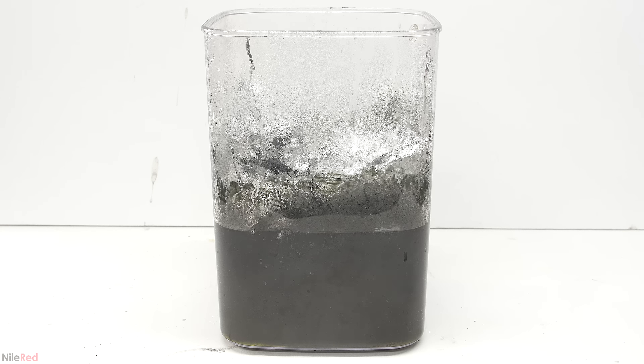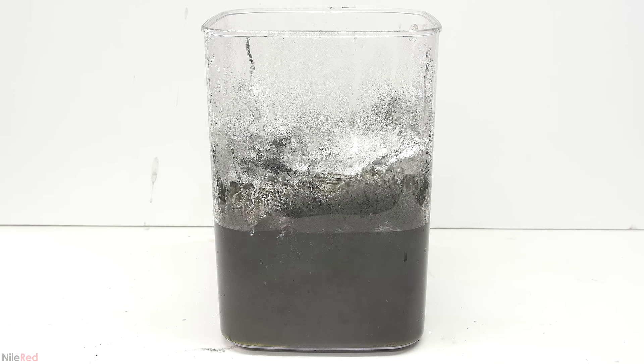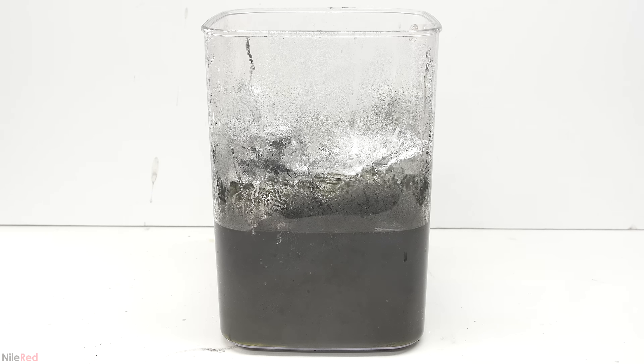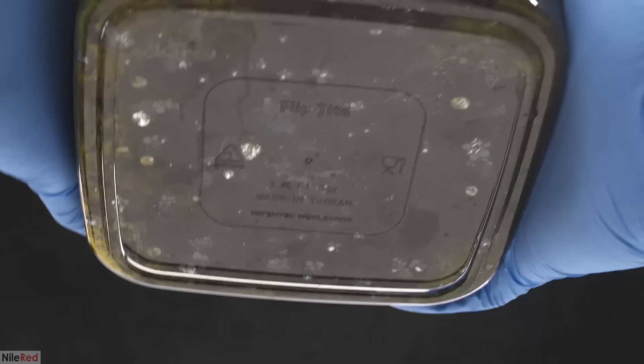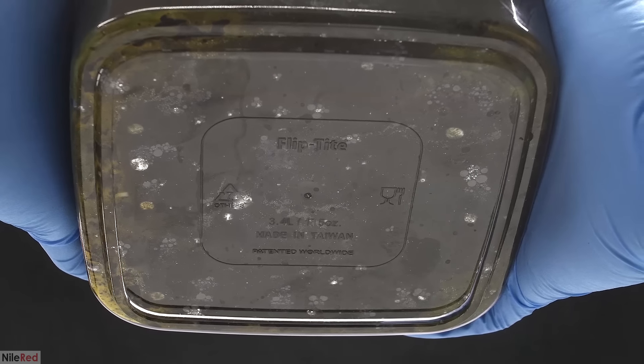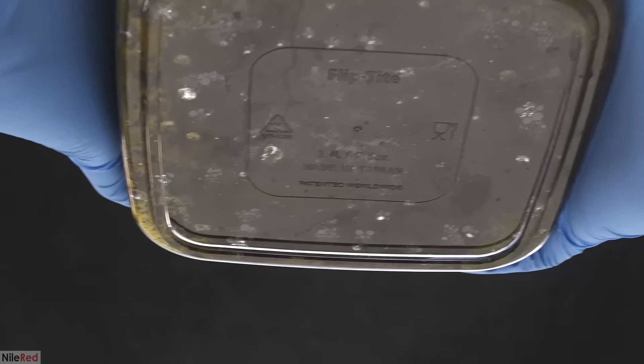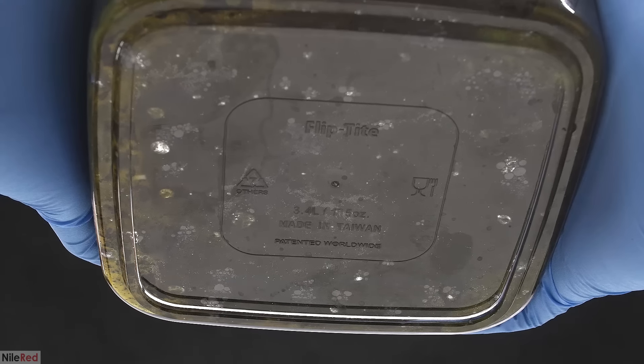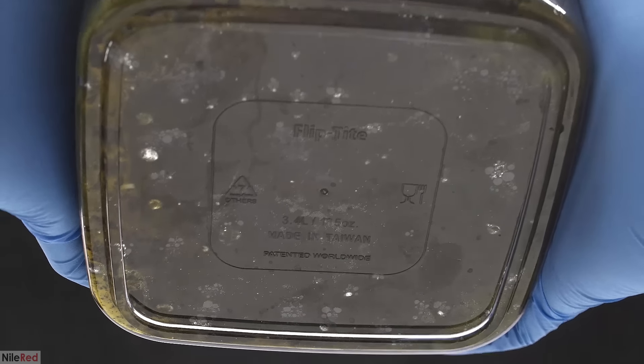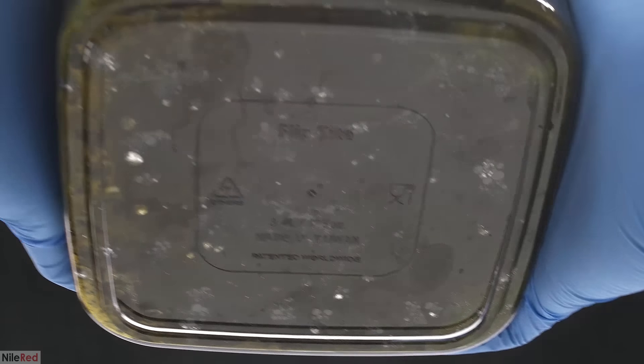As I continue to add more aluminum, the reaction slows down a lot and it becomes black. Aluminum foil is only 98 or 99% pure, and most of this black junk is likely just due to impurities. If I lift the container and take a look at the bottom, we can see a whole bunch of small mercury blobs. At this point I think I'm more or less done, but just to be sure, I did five more rounds of adding aluminum.